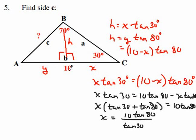So now we know how long length X is. Length X is 10 tan 80, all divided by tan 30 plus tan 80. And when you do that on a calculator, it's 9.07. So if that's 9.07, that means that that's got to be 0.93.